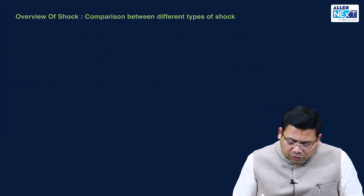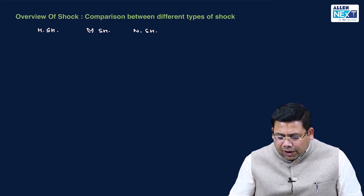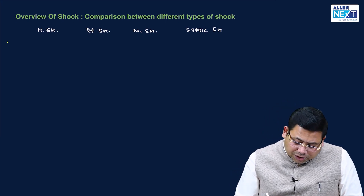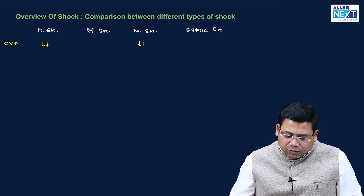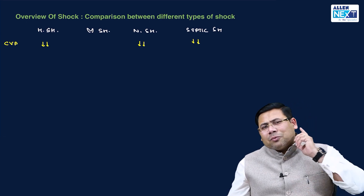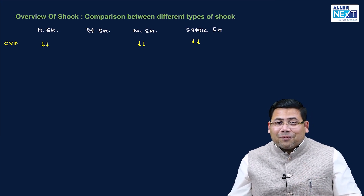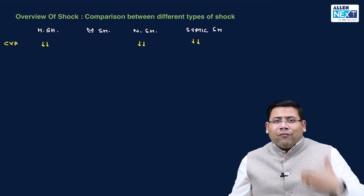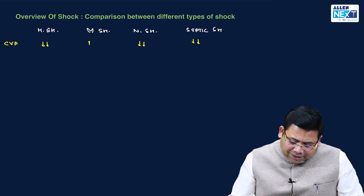Let us see CVP — central venous pressure, which is the jugular venous pressure (JVP) you actually observe. CVP is decreased in hypovolemic, neurogenic, and septic shock. In cardiogenic shock, the heart is not able to accommodate the flow coming from the vena cava, so there is a backlog at the level of the right atrium, and thus CVP or JVP is increased.